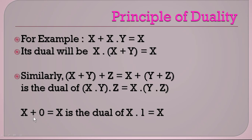Another example: x + 0 = x. The dual of this is x·1 = x. So this is how you convert — you find and write the dual of the expression by inverting all the symbols.